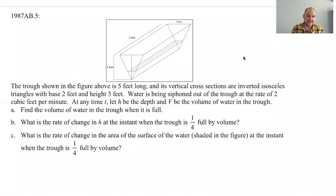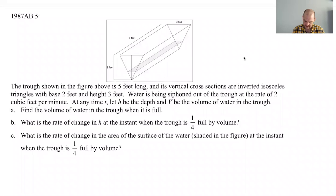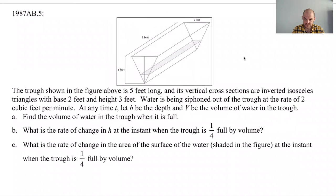All right, in this video we are going to try to do 1987 AB number five from the AP Calculus exam. It's a related rates question and let's see what we can do. So the trough shown in the figure above is five feet long, so that's never going to change no matter how much water's in it.